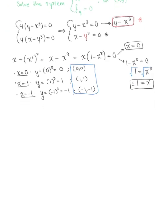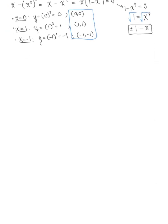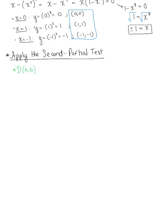Now, to classify these potential critical points as extrema, we need to apply the second partials test. The second partials test tells us that for some potential critical point (a, b), if we substitute it into the discriminant, we can determine if that point is a local maxima, a local minima, a saddle point, or if the test is inconclusive. We'll substitute each potential critical point into the discriminant formula.